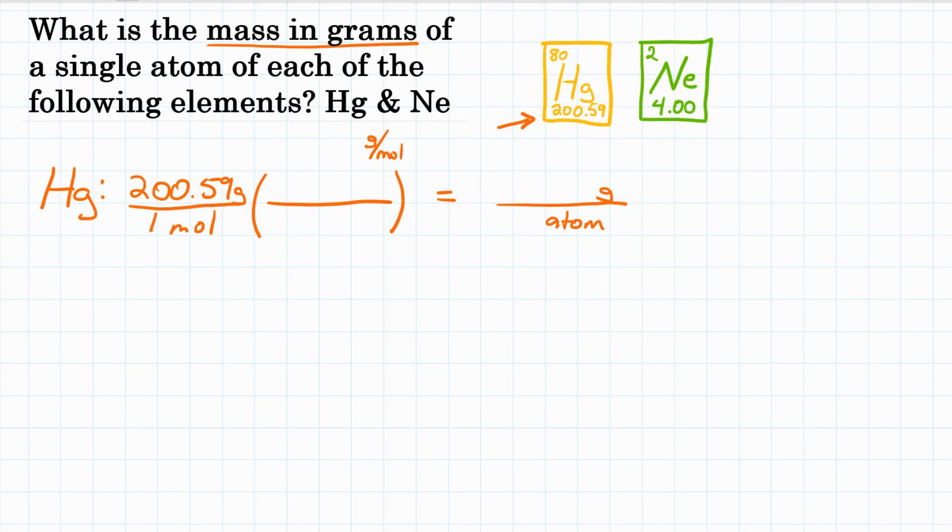Now, we want grams per atom, so we want to keep grams, but we want to get rid of moles. Moles is on the bottom of what we're starting with. So to get rid of it, we want it on the top of our conversion factor. And we want atoms. So there's our conversion factor with our units, and now we need to put in our numbers.